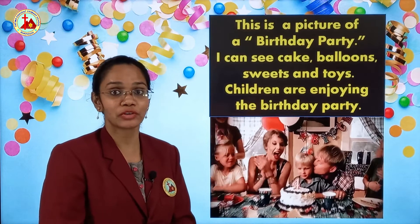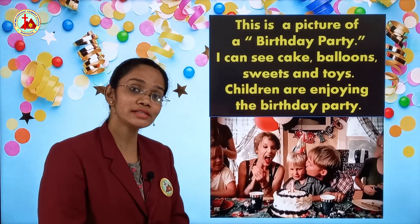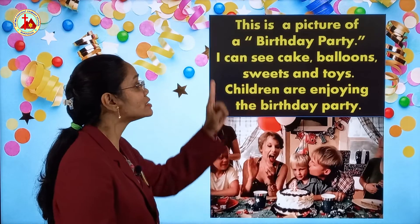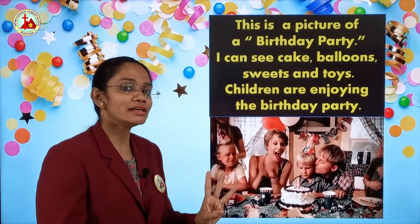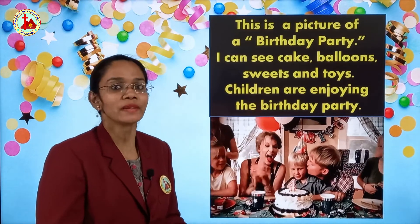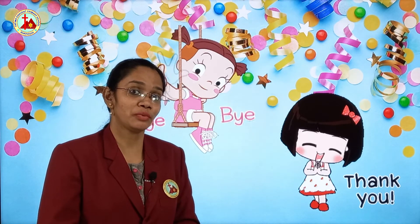This page is in your picture book. You all have to open that book and see and say the points. First point: this is the picture of a birthday party. Second point: I can see cake, balloons, sweets and toys. Third point: children are enjoying the birthday party. You all have to learn the picture conversation and send a video as homework to me. Till then, take care. Bye.